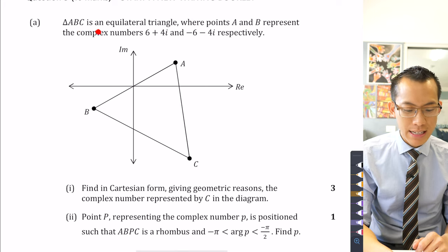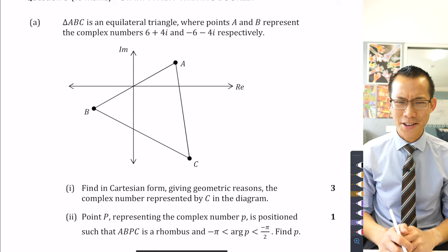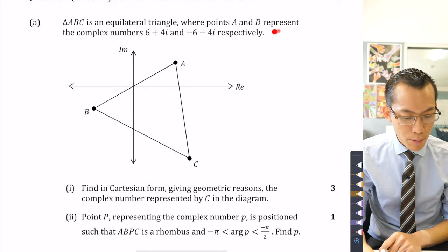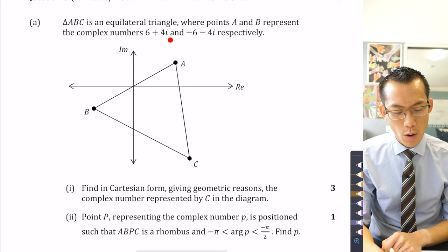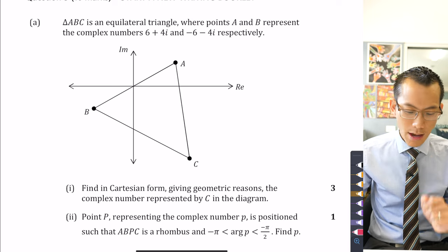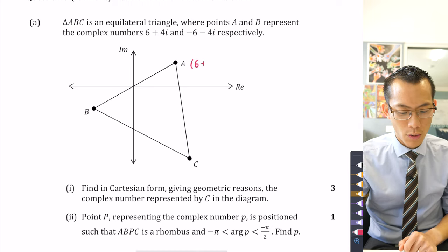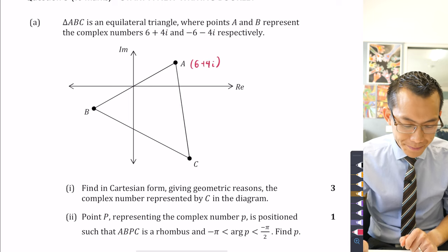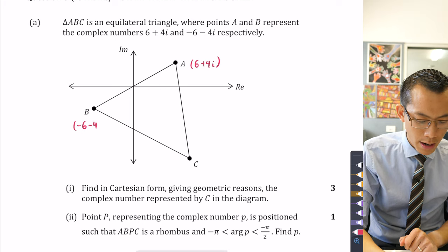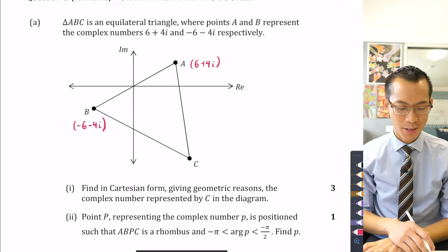Triangle ABC is an equilateral triangle. So there it is there. It looks vaguely equilateral, not to scale. You've got points A and B which represent the complex numbers 6 plus 4i and negative 6 minus 4i. So let's go ahead and put that information onto our diagram - 6 plus 4i over here and negative 6 minus 4i over here. The scale is not amazing but it'll do us fine.